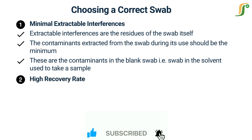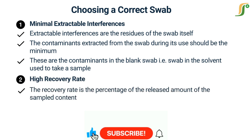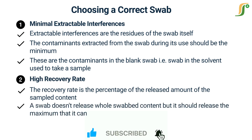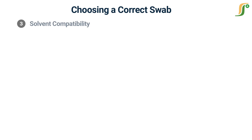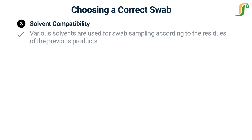Second is high recovery rate. The recovery rate is the percentage of the released amount of the sampled content. A swab doesn't release its whole content, but it should release the maximum that it can. A minimum 60% recovery rate is acceptable, but a higher recovery rate is better.